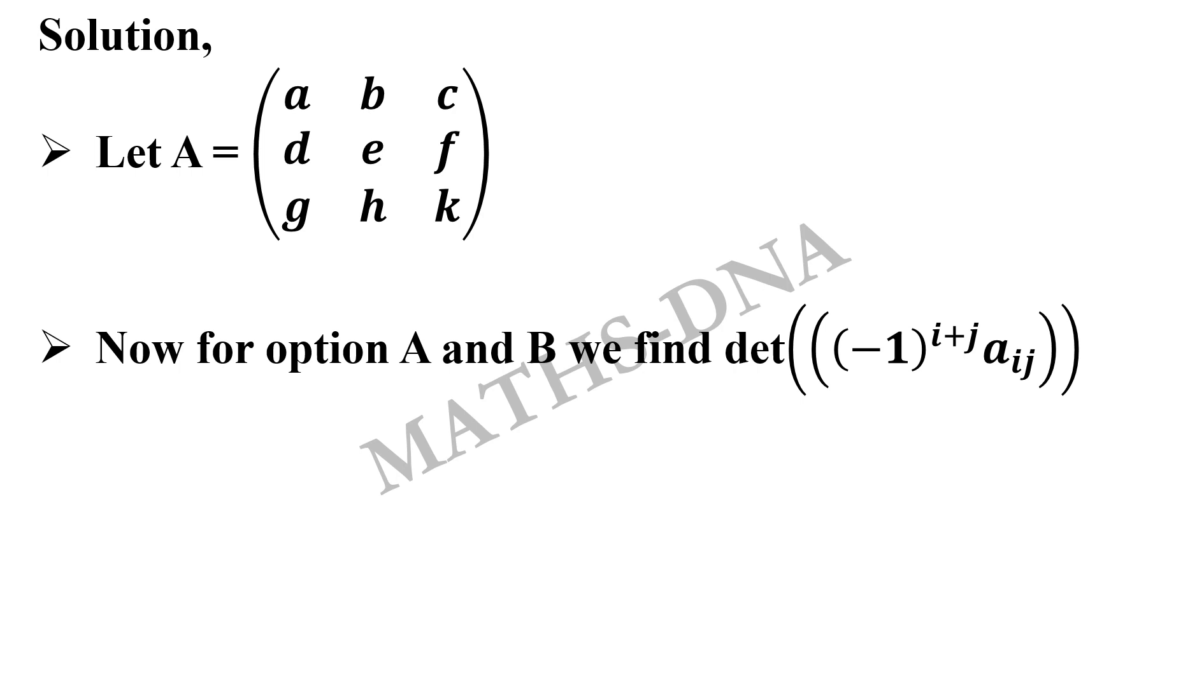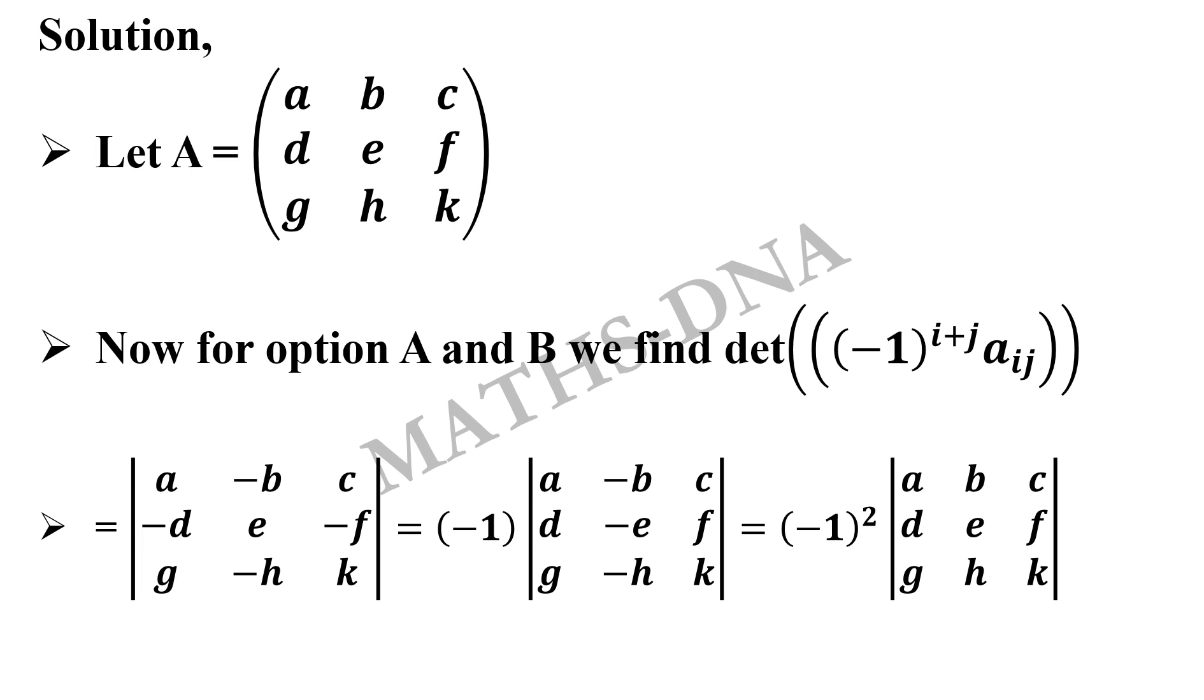So let us find that simply what will be the matrix for first entry A. It is first row and first column so minus 1 raised to 1 plus 1 which will be equal to minus 1 square. So Aij will be simply A. Now for B, minus 1 raised to 1, 2 because first row and second column that will give you minus 1 cube which is minus 1. So minus 1 into B.